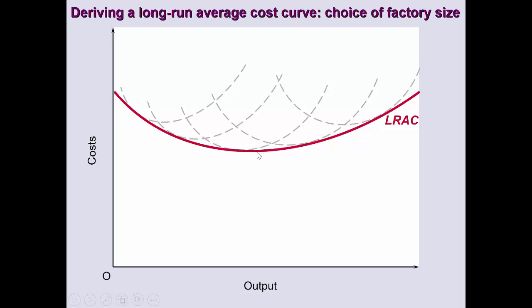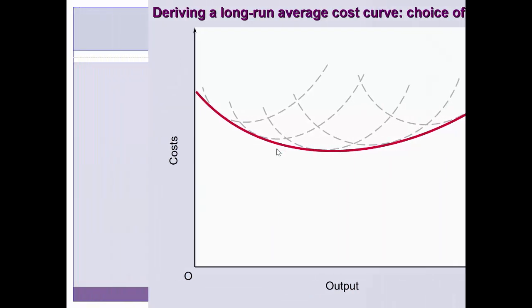Hopefully this video helped you understand what economies of scale and diseconomies of scale are, and how the long-run average cost curve is derived. The long-run average curve is a stretched-out U-shape, made up of many short-run curves. It's not a perfectly smooth curve — it's formed by touching the bottom portions of each of those short-run curves.